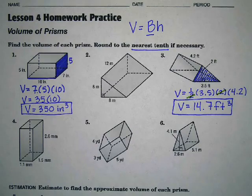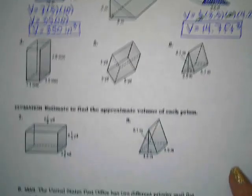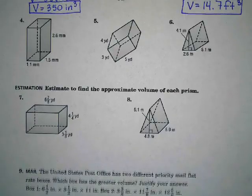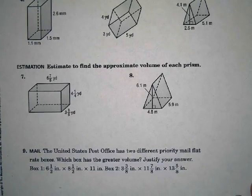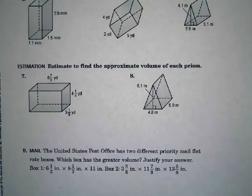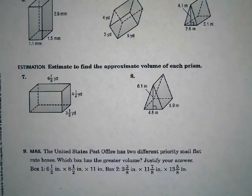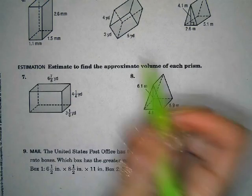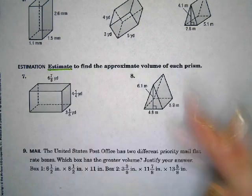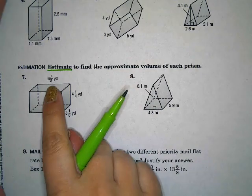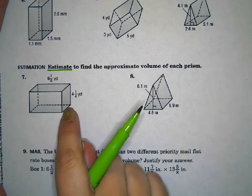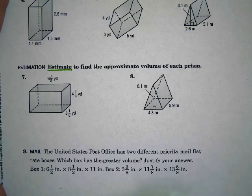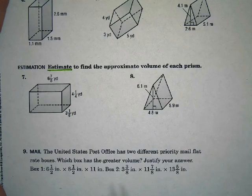The next problem that we're going to work on is number 7. And this is an estimation. It says estimate to find the approximate volume of each prism. So what we're going to do first is take the fractions that we have and go ahead and estimate them to the nearest whole number.